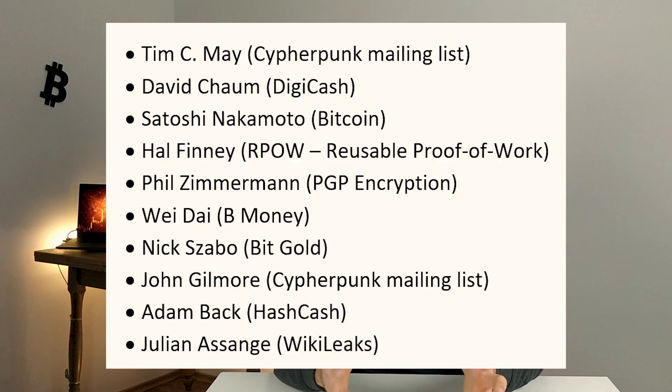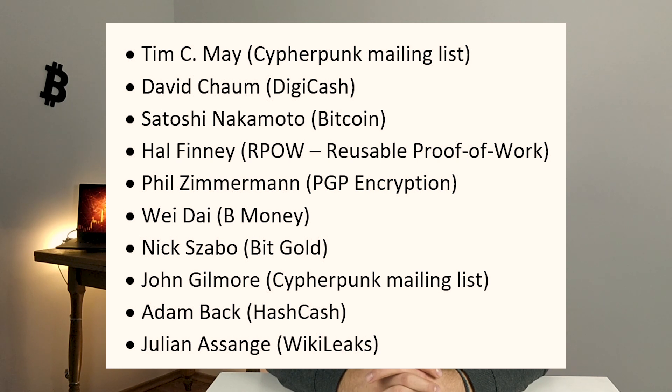The cypherpunks started a mailing list in 1992, which consisted of many prominent cryptographers. Most notable products of this community included David Chaum's DigiCash, Hal Finney's reusable proof of work, Wei Dai's b-money, Nick Szabo's Bitgold, and Adam Back's Hashcash.